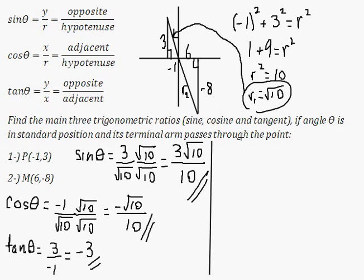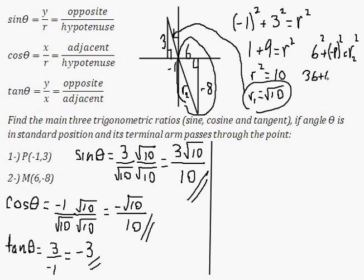I'm going to again use Pythagoras for this triangle. 6 squared plus negative 8 squared equals r2 squared. 36 plus 64 is r2 squared. 100 is equal to r2 squared. Therefore r2 is equal to the square root of 100, which is 10. So this measures 10.